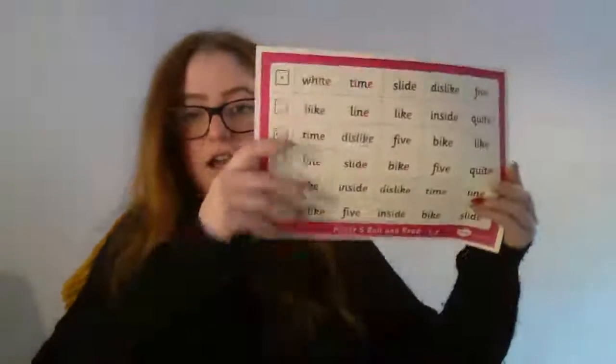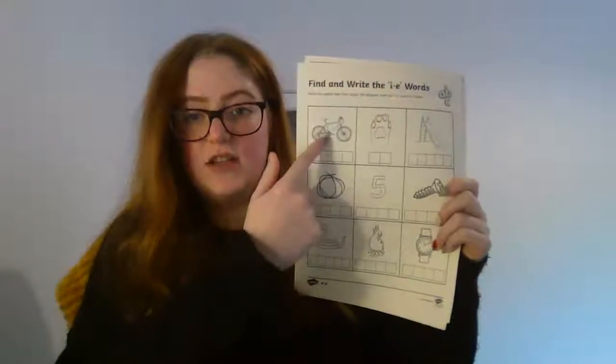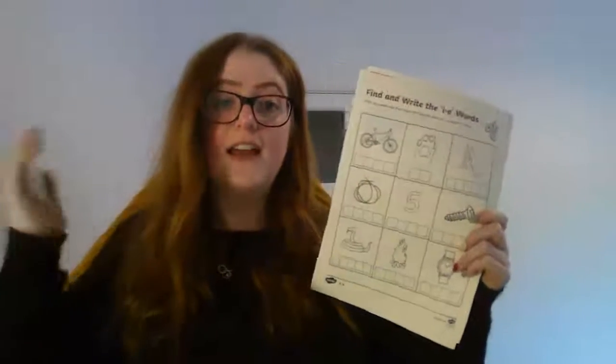Set 3: you've got the split digraph 'i', so you've got your roll and read for the 'i', and then you've got your 'find the split i' — so you look at the picture, you write it, and then you color any pictures that have the split 'i' sound in them.